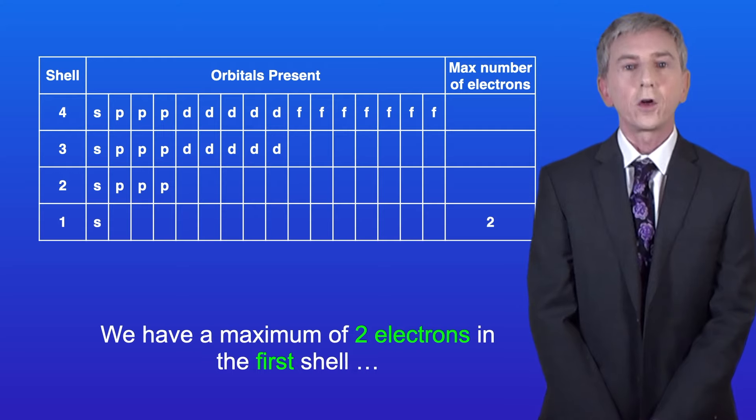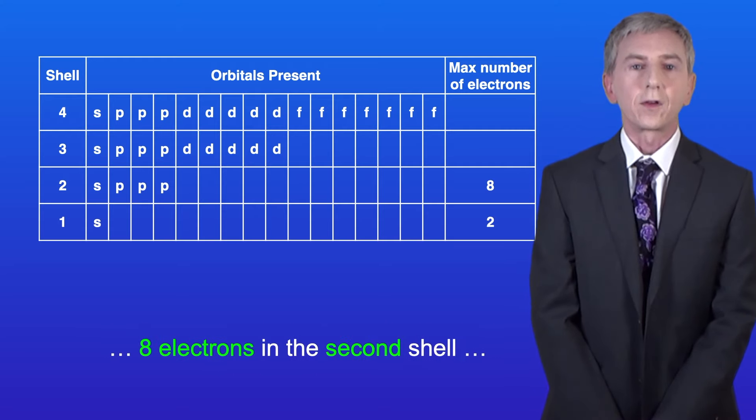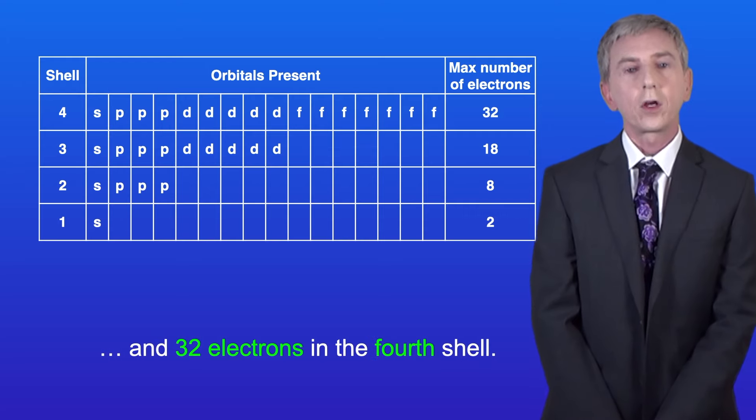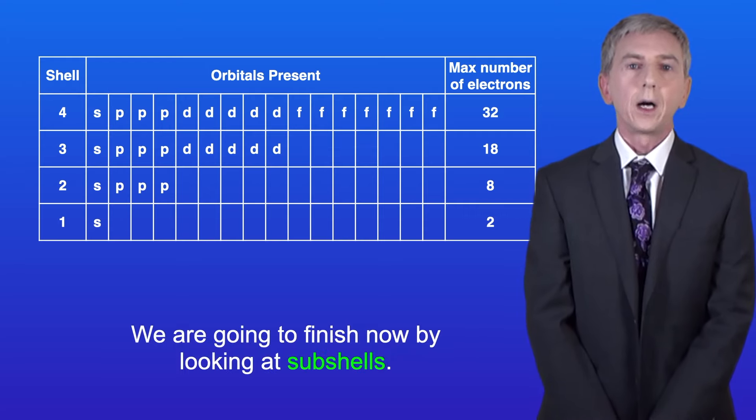We've got a maximum of two electrons in the first shell, eight electrons in the second shell, 18 electrons in the third shell, and 32 electrons in the fourth shell.